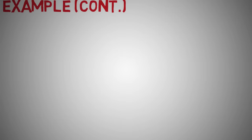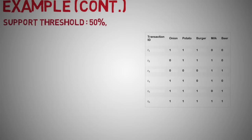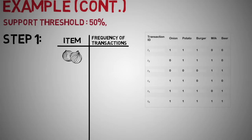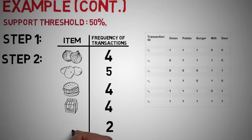Let's now look at an intuitive explanation of the algorithm. Before beginning, let us set the support threshold to 50%, meaning those items are significant for which the support is more than 50%. Step 1: we create a frequency table of all items that occur in all the transactions. In our case, onions have a frequency of 4, potatoes 5, burgers 4, milk 4, and beer 2. Step 2: only those elements are significant for which the support is greater than or equal to the support threshold. Here the threshold is 50%, so only items occurring in more than 3 transactions are significant — those are onions, potatoes, burgers, and milk.